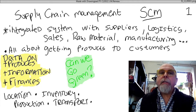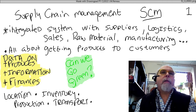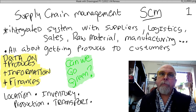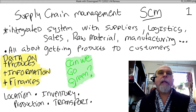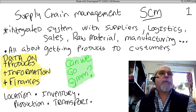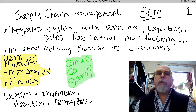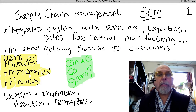One of the enterprise systems you'll be hearing a lot about in industry is something known as supply chain management, or SCM. Basically, what supply chain management is all about is to create an integrated system between suppliers, logistics, transportation, sales, raw material manufacturing, and everybody. It's all about how do we get products to our customers as efficiently as possible.